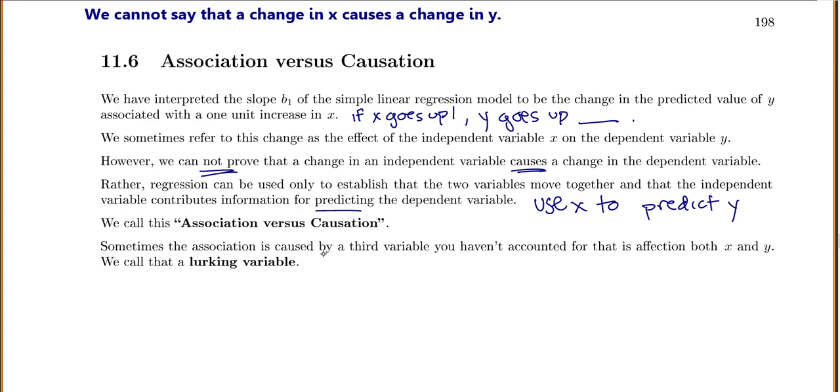Sometimes this association, the reason that they seem to be moving together, is caused by a third variable you haven't encountered that's affecting both x and y. We call that a lurking variable.